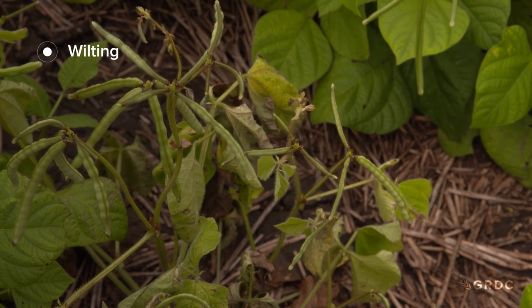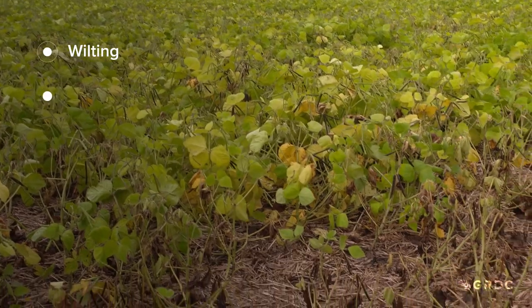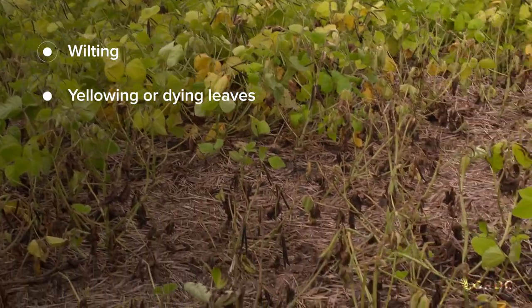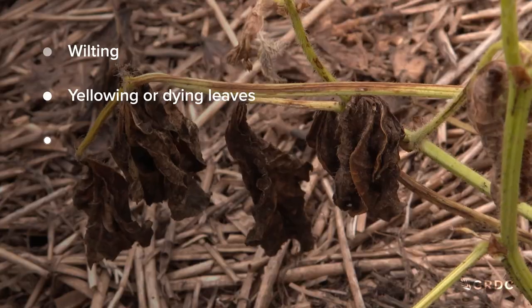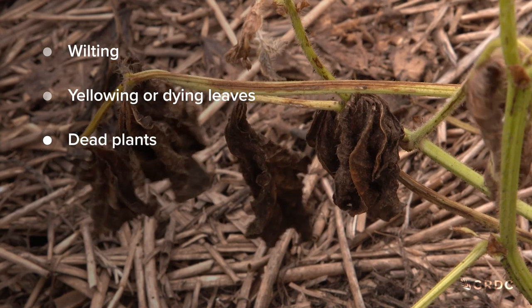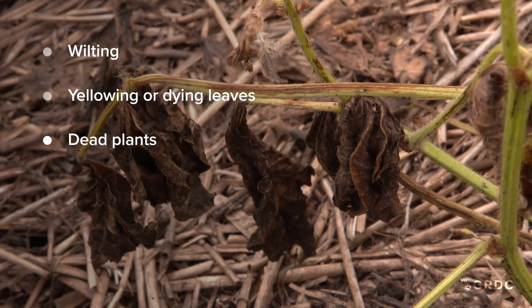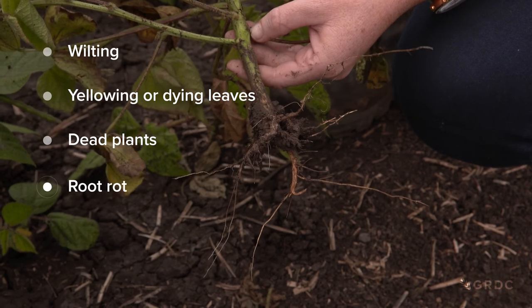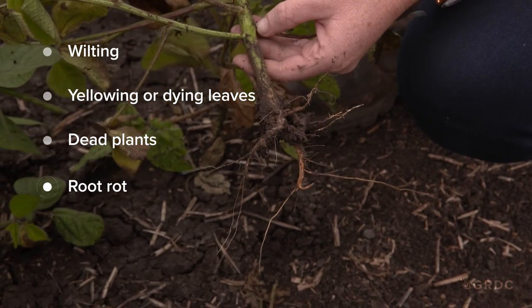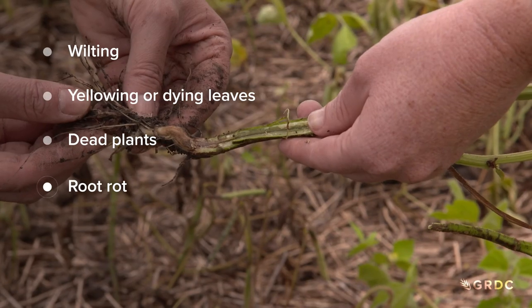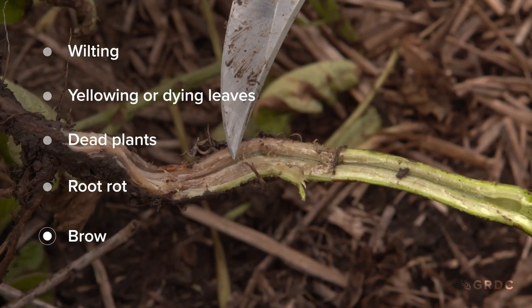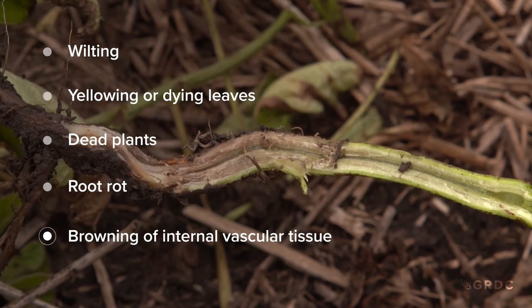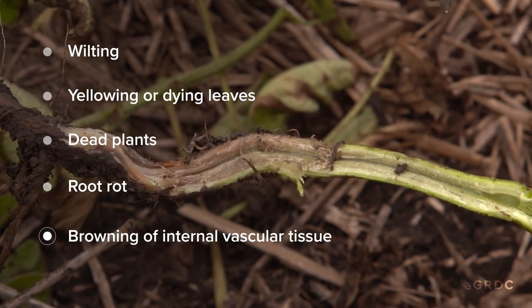The first thing you can look for is wilted plants that may be a little stunted. Secondly, check whether the leaves are yellowing, showing chlorosis, or dying. Thirdly, plants may be dying altogether as a result of the disease. Fourthly, look at the plant roots — are they rotted, or does the rot extend into the basal tissues? And lastly, if you split the stem open, with Fusarium wilt you'll notice some browning of the internal tissues.